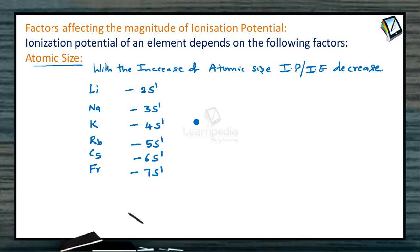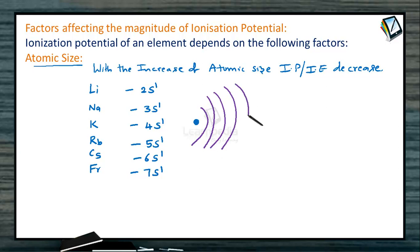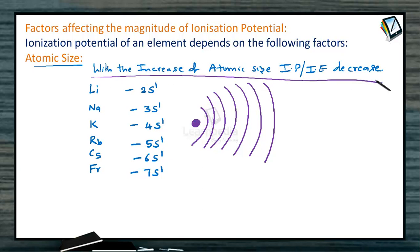As discussed in the previous session, lithium has 2 shells, sodium 3 shells, potassium 4 shells, rubidium 5, cesium 6, and francium 7. This means as we keep increasing the size of an atom, the nuclear power of attraction — the attracting power of the nucleus towards the electron — will decrease, because the distance keeps increasing. When the attracting power decreases, the elimination of the electron from the valence shell becomes easy. So, with the increase of atomic size, the ionization potential decreases.